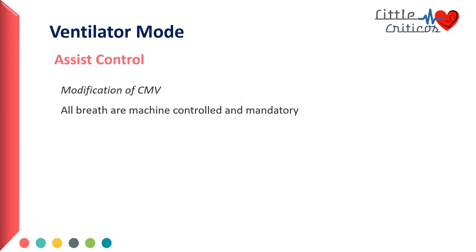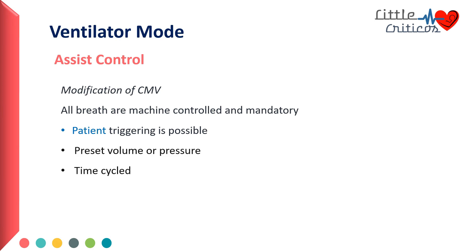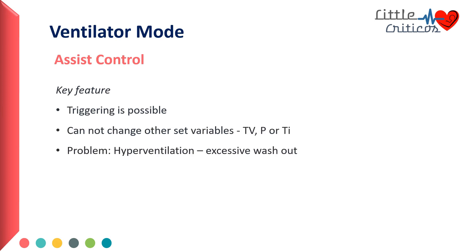Since controlled mandatory mode of ventilation delivers a preset volume at a preset rate, it may cause significant asynchrony in patients who have active breathing efforts. So a modification — assist control mode of ventilation — is preferred. Here, all breaths are machine controlled and mandatory; however, patient triggering is possible. There is a preset volume or pressure delivered to the patient in a time-cycled manner similar to controlled mandatory ventilation. The key feature that differentiates assist control mode from controlled mandatory ventilation is that triggering is possible in assist control mode.